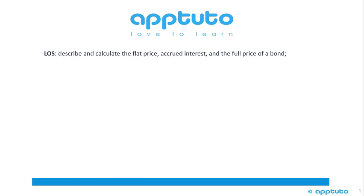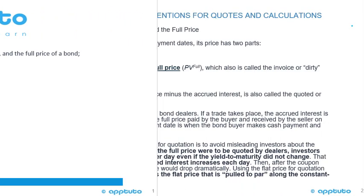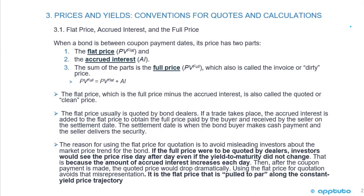This LOS is to describe and calculate the flat price, accrued interest, and the full price of a bond. We're now looking at Prices and Yields: Conventions for Quotes and Calculations — specifically the flat price, accrued interest, and the full price.